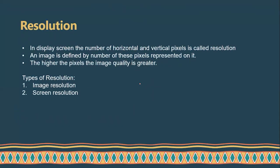Now, what about resolution? On a display screen, the number of horizontal and vertical pixels is called the resolution. If you see the screen, this is the horizontal and this is the vertical — horizontal and vertical pixels on the screen, you call it as the resolution. An image is defined by the number of these pixels represented on it. If higher the pixels, the image quality is greater. If lower the pixels, the image quality is lesser.